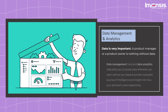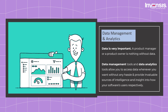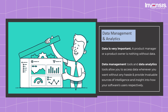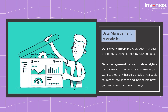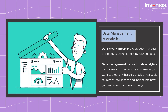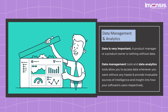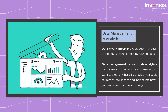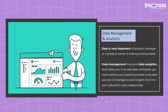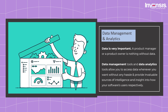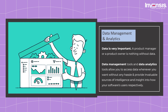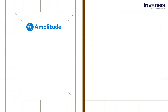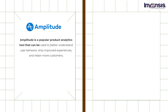The next category that we have is analytics and data management. A product manager or a product owner is nothing without data — you will need the right tool to manage your data. Without accurate analytics, you are going nowhere. Right tools and data provide invaluable sources of intelligence and insight into how your software's users behave. In this list, we have an analytics tool and a data management tool. With Amplitude, you can analyze what makes your users tick, rapidly release better product experiences, and grow your business across web and mobile.